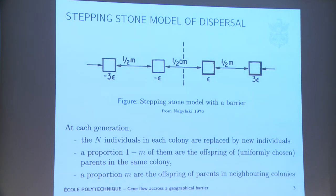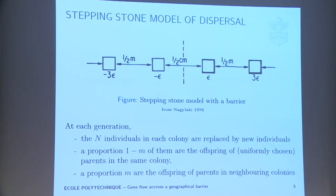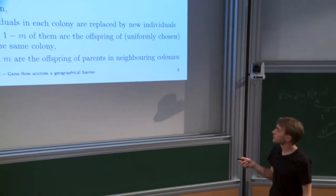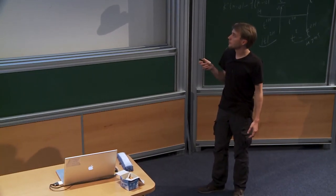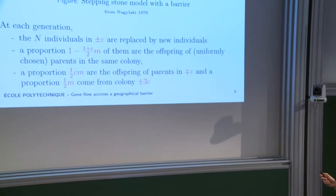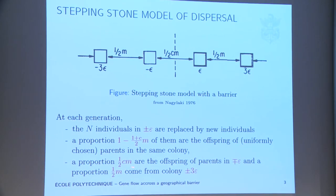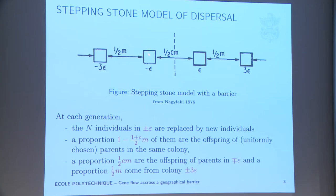I'm going to tell you about a very simple model to represent these situations. Each square here is a population with N individuals living in it. My mountain range is here. So this is towns in France and towns in Spain. This is the Pyrenees. At each generation, I replace every individual in each colony by children of the previous individuals. A proportion 1 minus m of children in each colony come from parents from the same colony, and a proportion m come from one of the neighboring colonies. Except these two populations around the barrier, where half of cm comes from the population on the other side of the barrier. So you have to think of c as a very small parameter, something between 0 and 1, and potentially very small. There's a reduced exchange of migrants between these two populations.